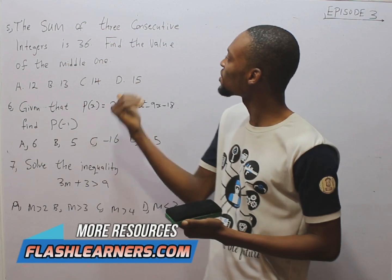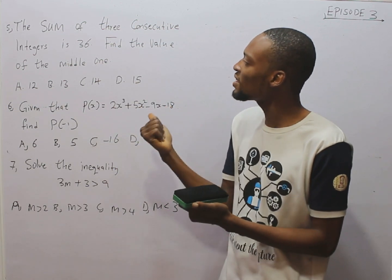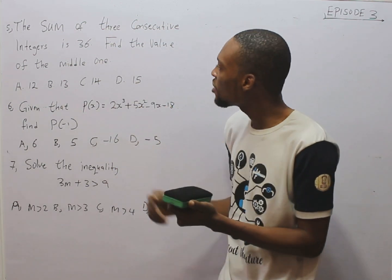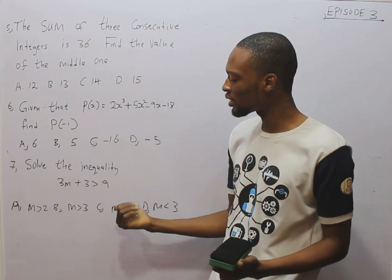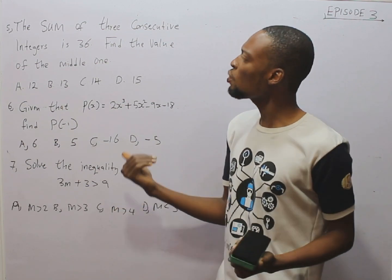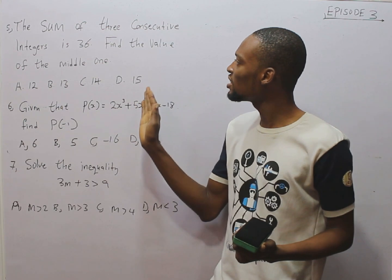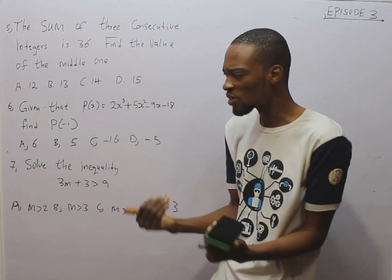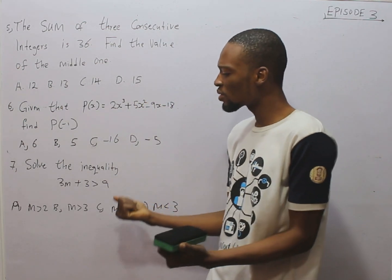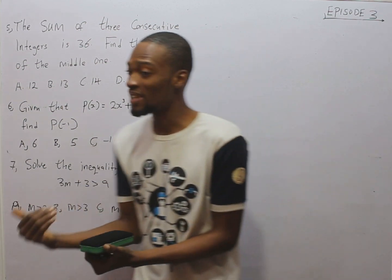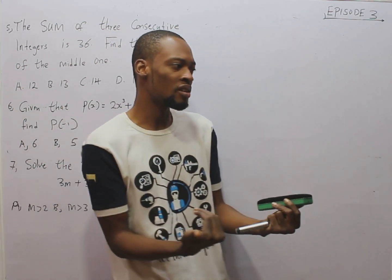This says, the sum of 3 consecutive integers is 36. Find the value of the middle one. The keyword there is consecutive integers. What does consecutive mean? Consecutive simply means numbers that are following each other continuously.